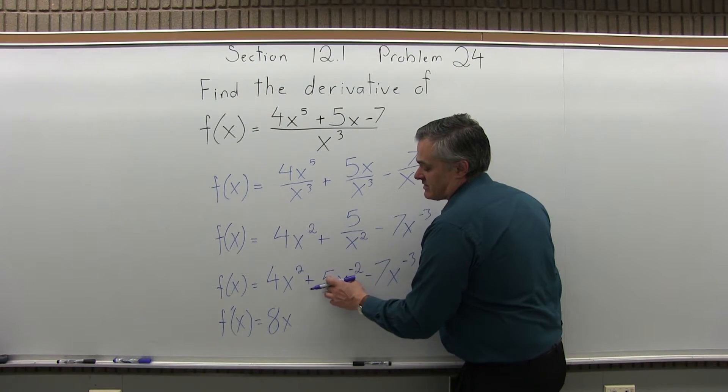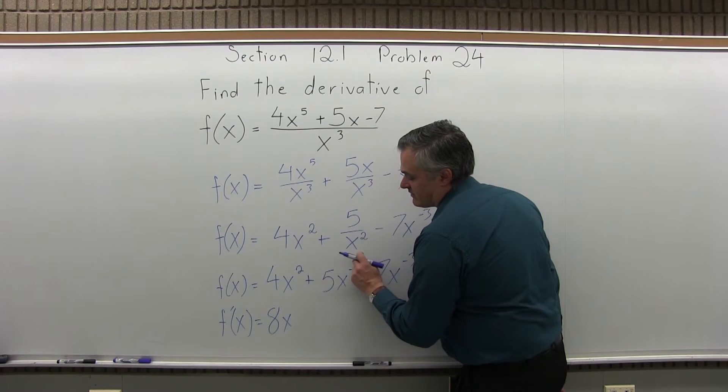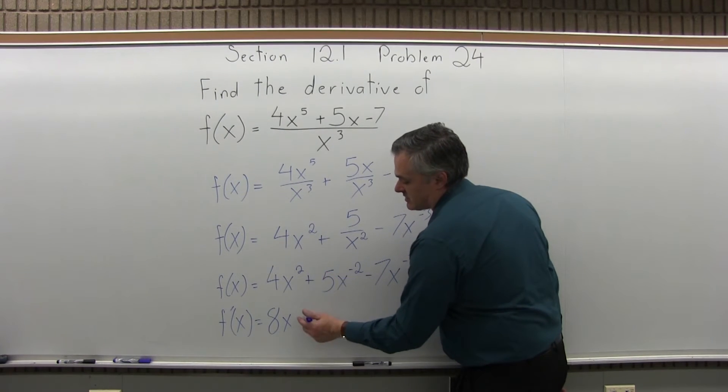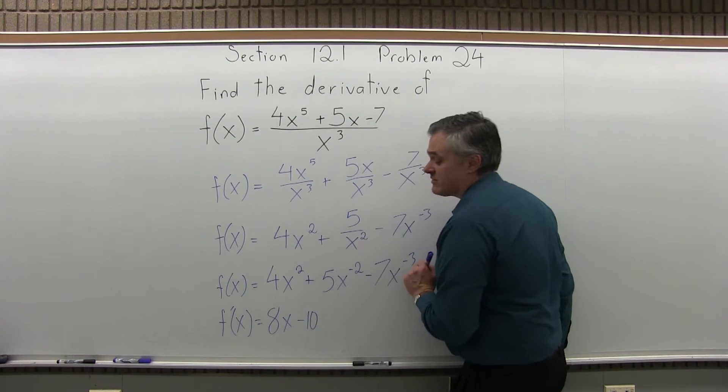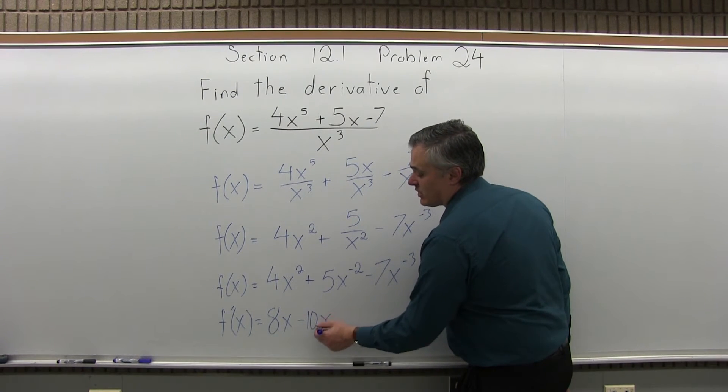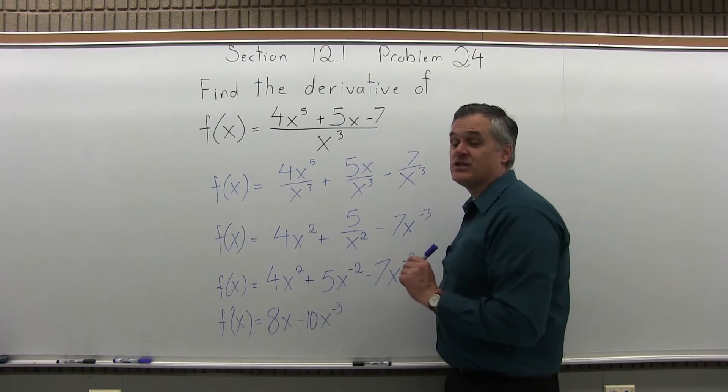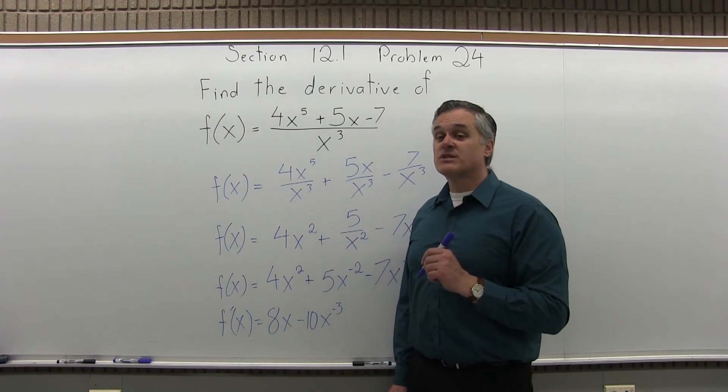The middle piece, 5x to the negative 2. The negative 2 comes down times the number in front. The exponent of negative 2 comes down times the 5. You have negative 10, right? Negative 2 times 5 is negative 10. x to one less power. Pay attention. It's negative 3. Minus 2, subtract 1 goes to minus 3.